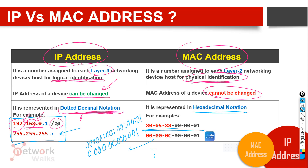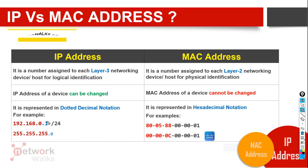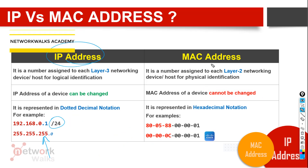The subnet mask can be mentioned either with slash notation or with dotted decimal notation. So those are some of the basic differences between IP addresses and MAC addresses.